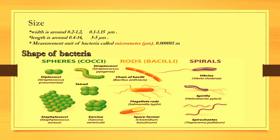The last type is in the form of spiral. For example, Vibrio cholerae. Another type called spirilla contains flagella, for example, Helicobacter pylori or H. pylori. Another type called spirochetes is twisted in form and elongated like a rope, for example, Treponema pallidum.